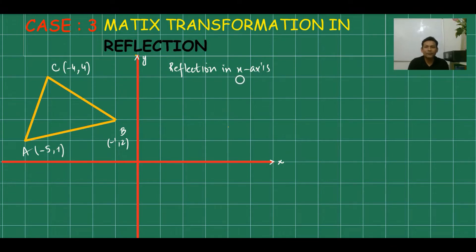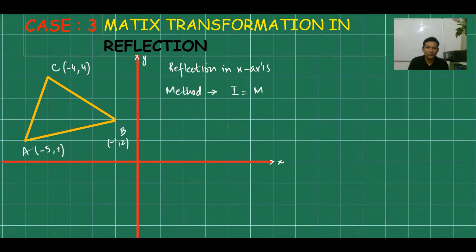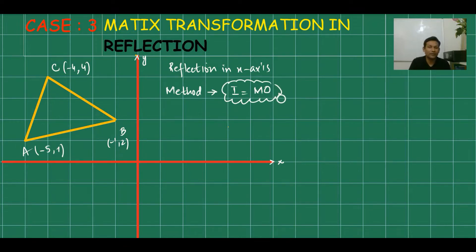What we need is the matrix for the x-axis and the method. To get the image, the formula is: Image = M × O, that is, matrix of transformation multiplied by the object. This is the simple matrix transformation formula — we multiply the matrix with the object, not object with the matrix. M×O, not O×M.